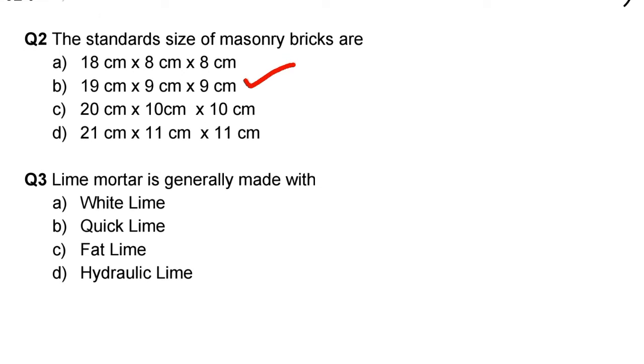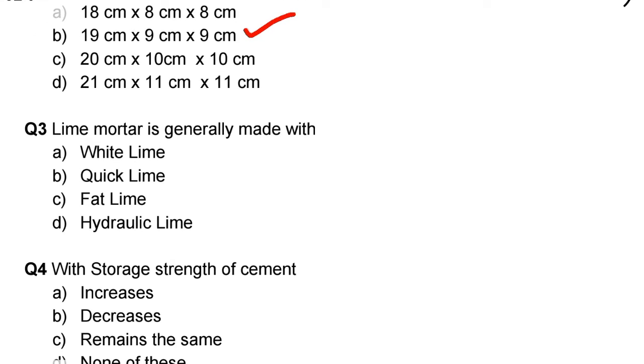Next question: lime mortar is generally made with. Option A: white lime, Option B: quick lime, Option C: fat lime, Option D: hydraulic lime. The correct answer is option D, hydraulic lime.